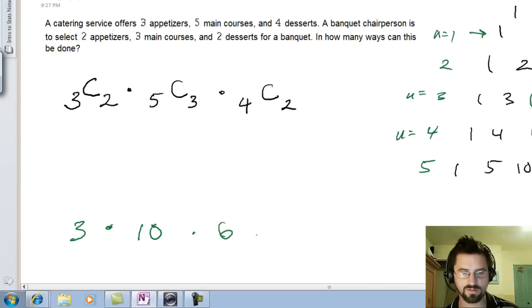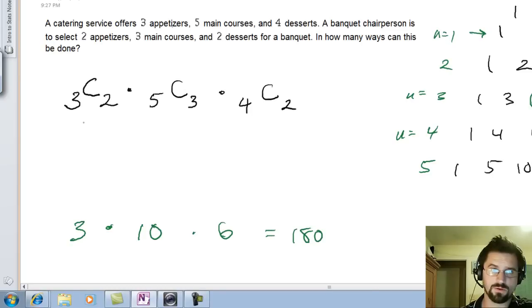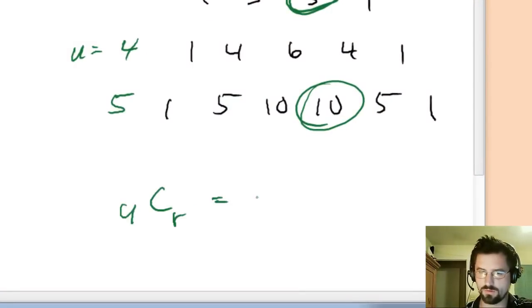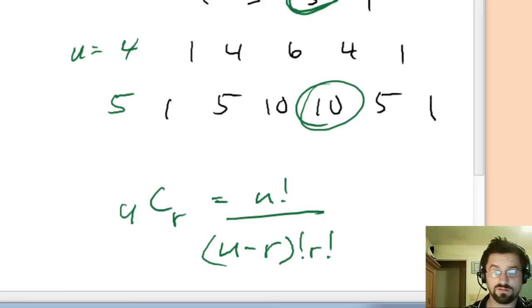So, three times ten times six is 180 is our answer. If you're up to this topic, you know how to do combinations. So, you know that n choose r equals n factorial over n minus r factorial times r factorial.